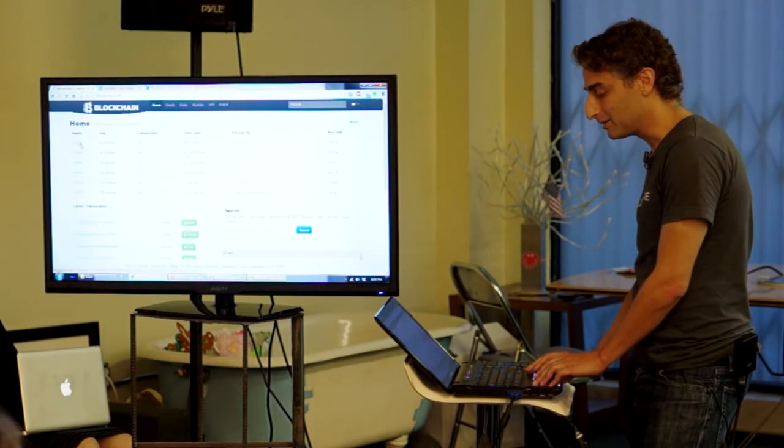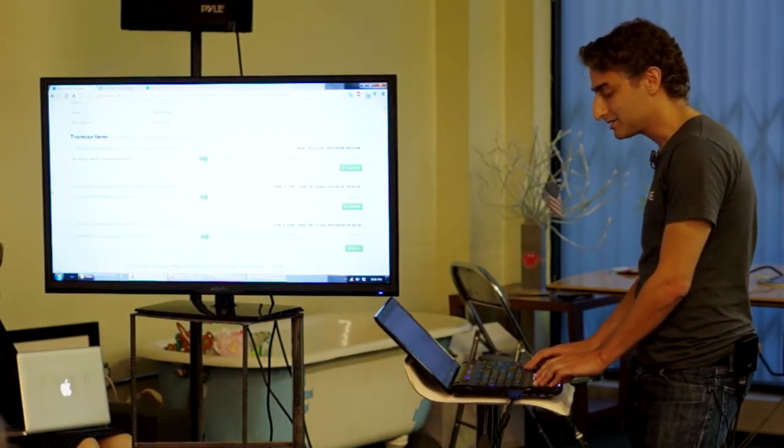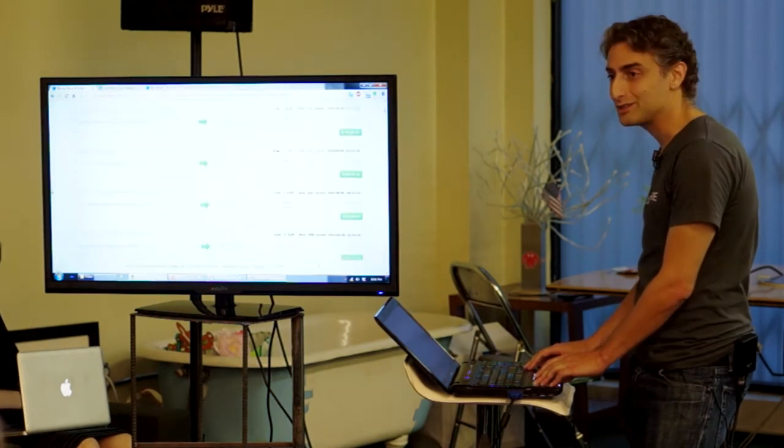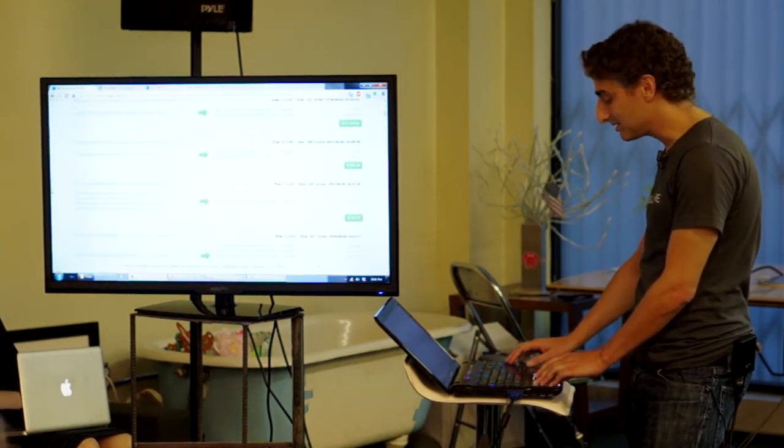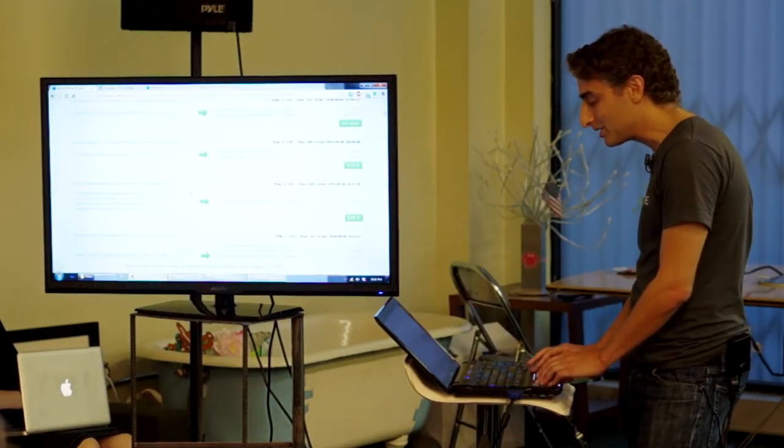And if I click on the block, I can actually see the list of every single transaction in that block. You can see there's 200 of them, so I won't go through each one.